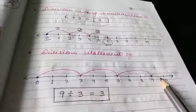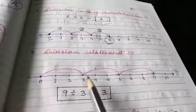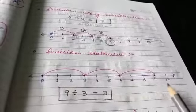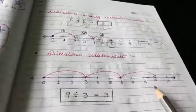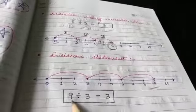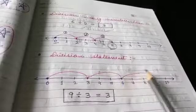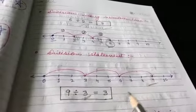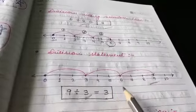Now let's look at writing a division statement. Students, a number line is already drawn for you starting from 0 to 10, and it is taking 3 jumps. Starting from 0, it goes till 9. So we write 9 first, then we write 3 because we are jumping 3 numbers at a time, and we took 3 jumps in total. So the division statement is 9 divided by 3 equals 3.